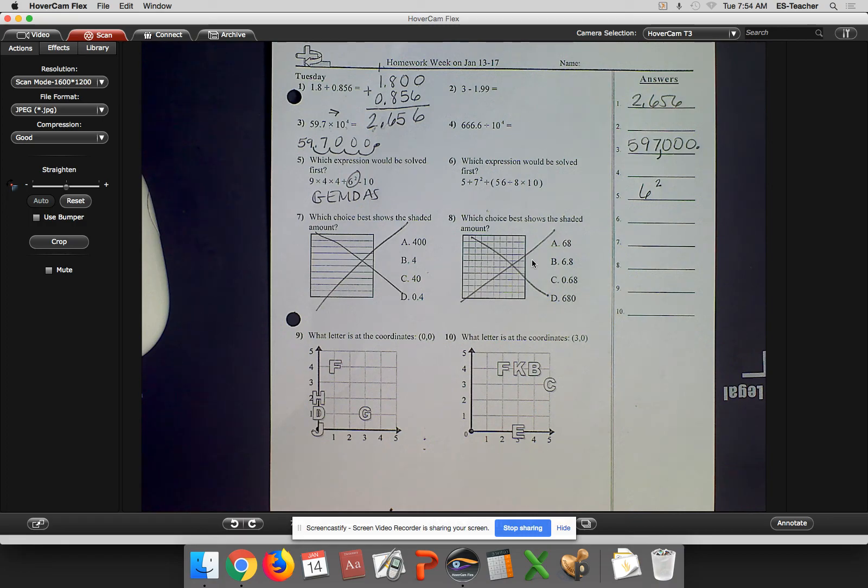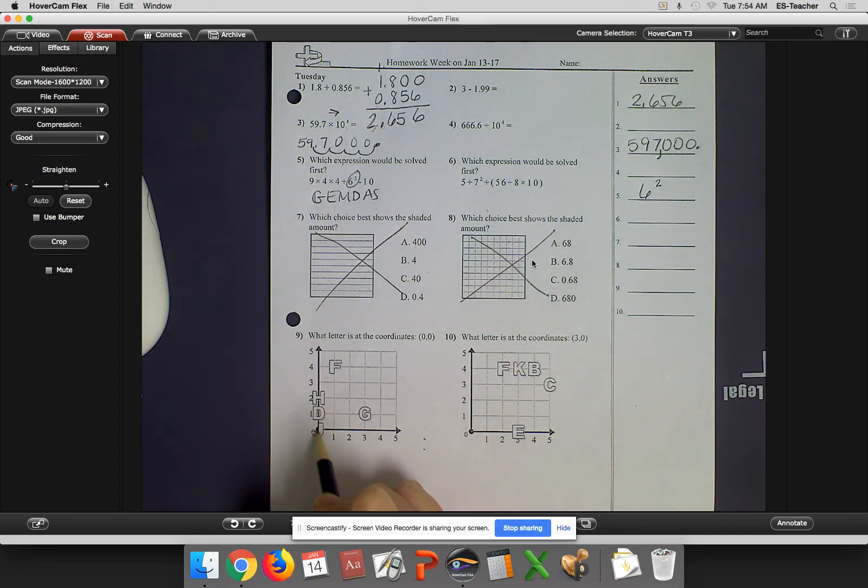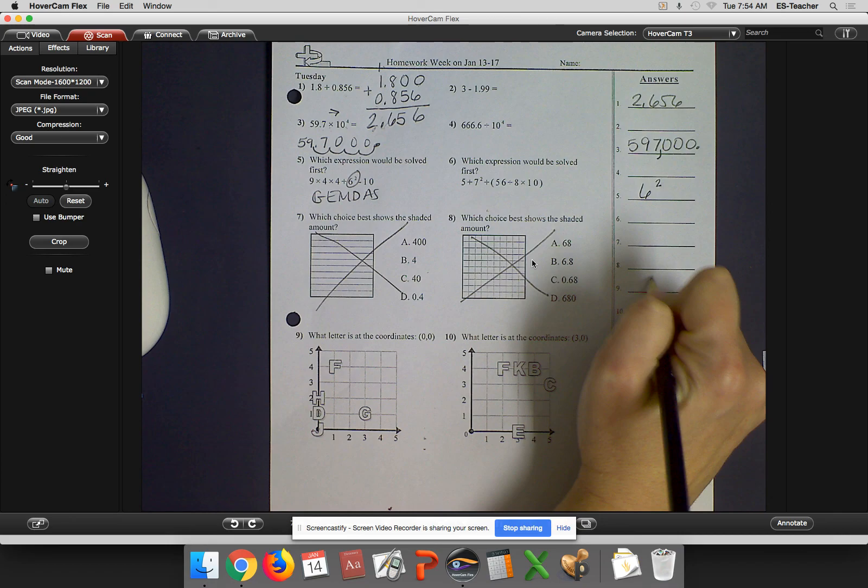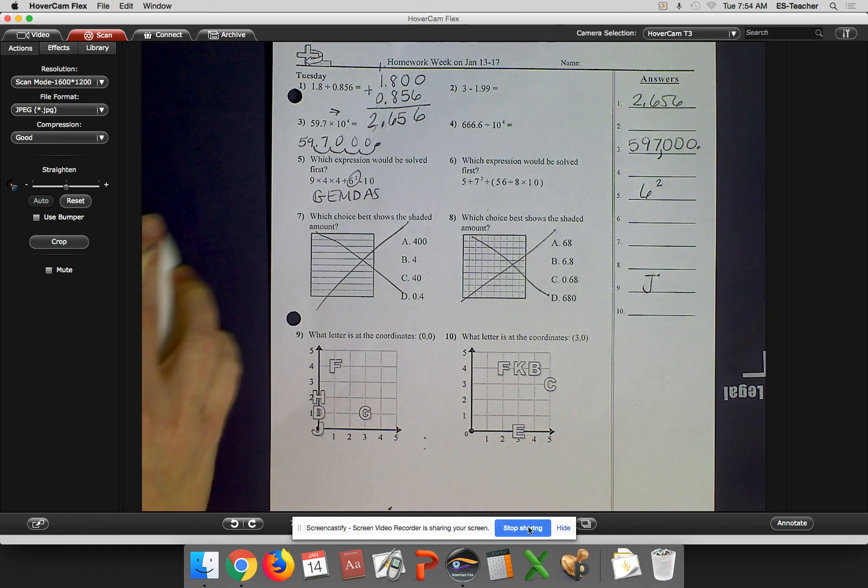Number 9, what letter is at the coordinates 0, 0? Well, I go over to my friends at 0 and up to the room at 0. So for number 9, the answer is J. Hey, guys!